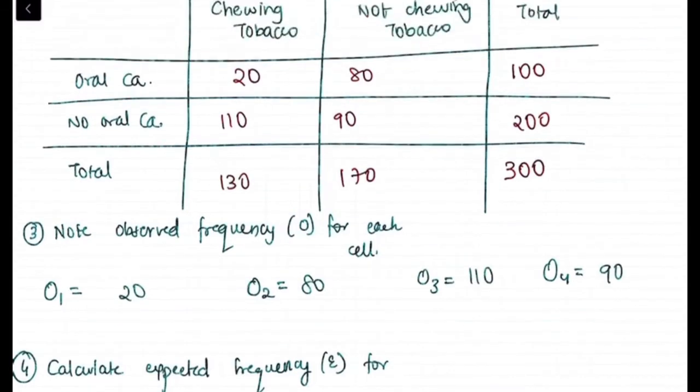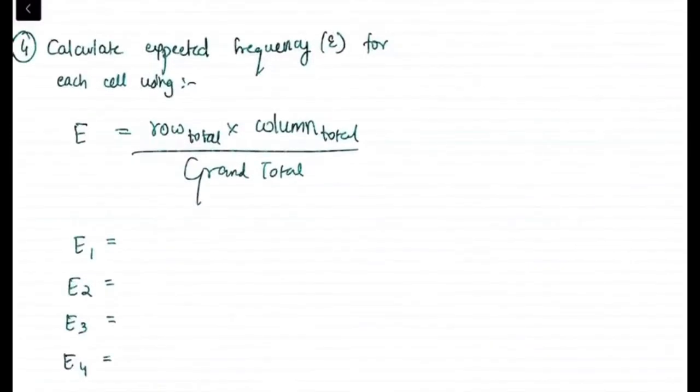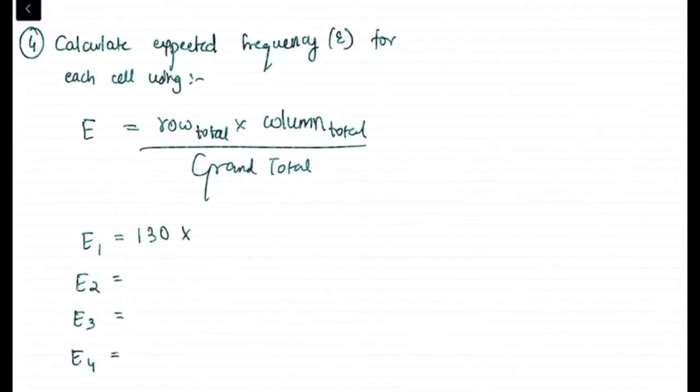Observed frequency O for each cell: O1, O2, O3, O4. Remember this sequence: 1, 2, 3, 4. Calculate the expected frequency for each cell using E equals to row total into column total upon grand total.